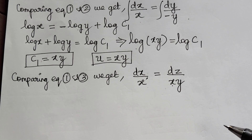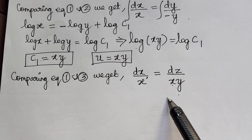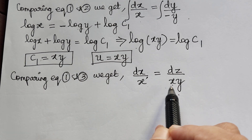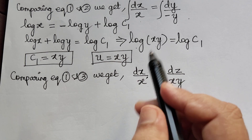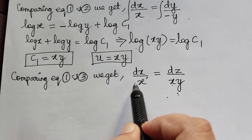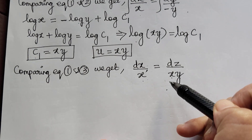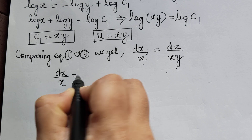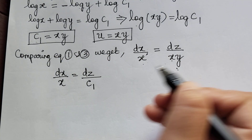Since we are stuck, we use the method of substitution. We take the first solution we obtained and substitute it here. The first solution is c1 equals xy, so xy is replaced by c1. We do this kind of substitution when we are not able to compare the equations. So dx by x equals dz by c1.